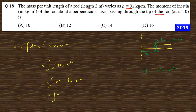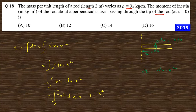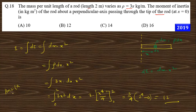This simplifies to 3x cubed dx. The limit of x will be 0 to the maximum length, which is 2 meters. So this is the integration from 0 to 2 of 3x cubed dx, giving 3x to the power 4 divided by 4, evaluated from 0 to 2. This gives 3/4 times 2 to the power 4 minus 0, which simplifies to 12. So the answer of this question is 12 kg·m², and option number b is the correct answer. Go to the next one.